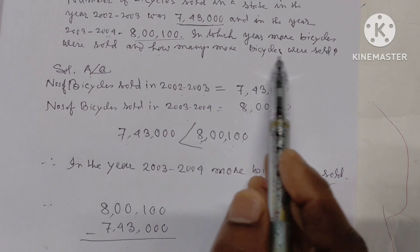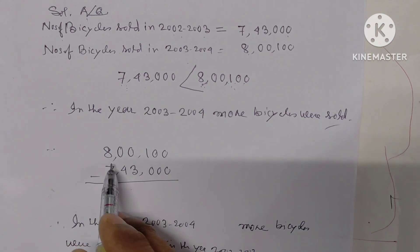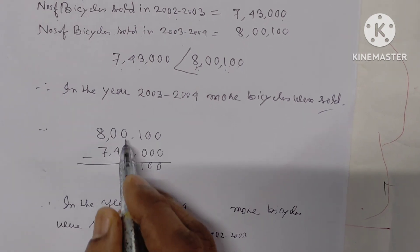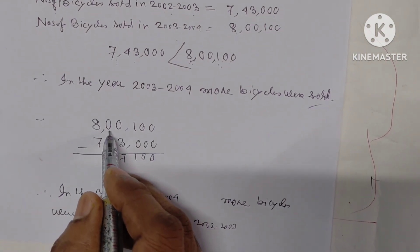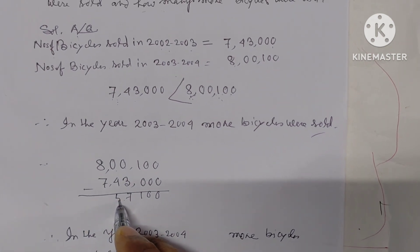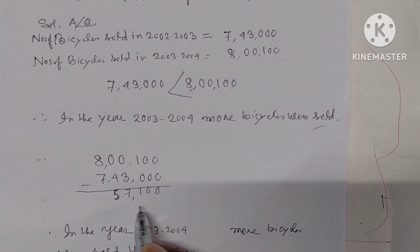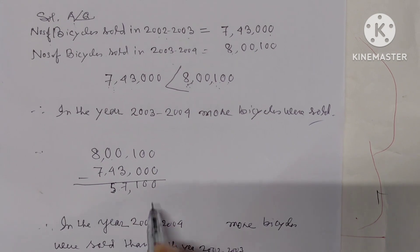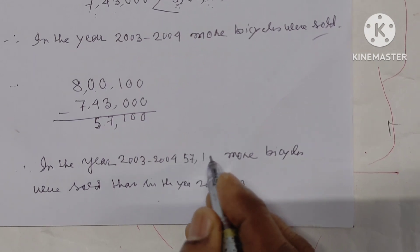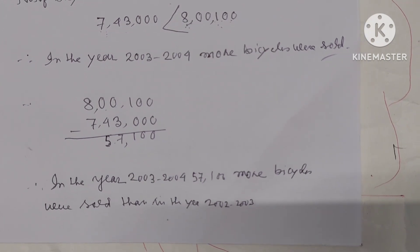How many more bicycles are sold? In the year 2003 to 2004, 57,100 more bicycles are sold than in the year 2002 to 2003.